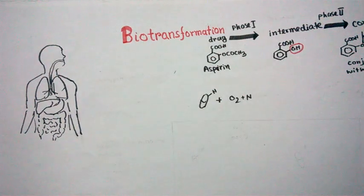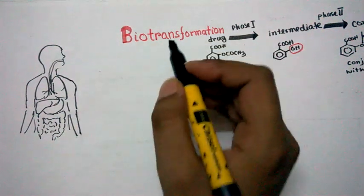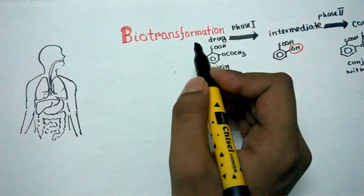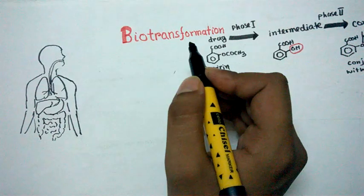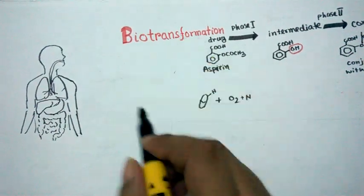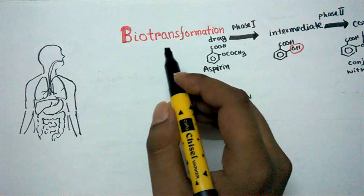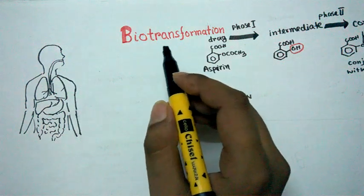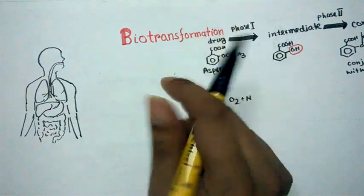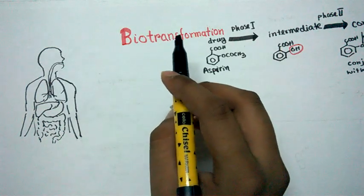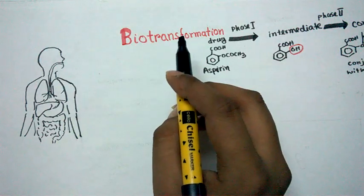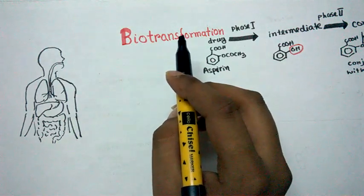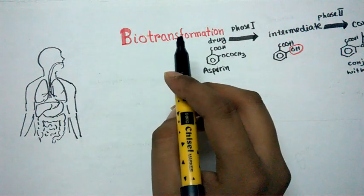In this video I'm going to talk about biotransformation. Biotransformation means transformation of a drug, and it could also be thought of as detoxification of drugs. Biotransformation reactions take place in the liver, and there are two phases of biotransformation reaction — phase 1 and phase 2. Apart from the liver, biotransformation can also take place in the lungs and in the intestine, because some enzymes in the intestine also participate in biotransformation reactions.